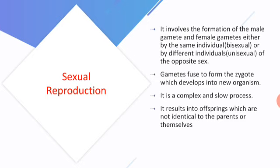Bisexual means both male and female reproductive structures are present in the same organism. Unisexual organisms are those in which the reproductive structures are present in different individuals. In sexual reproduction, the male gamete and the female gamete fuse to form a zygote, which develops to form a new organism.